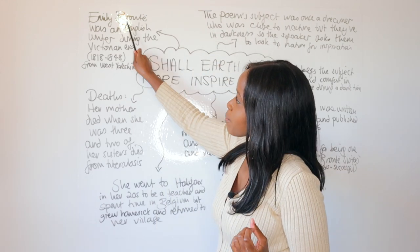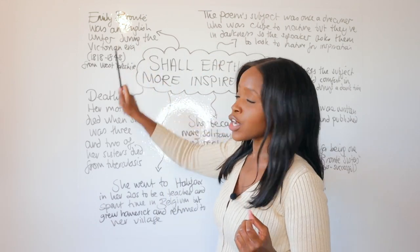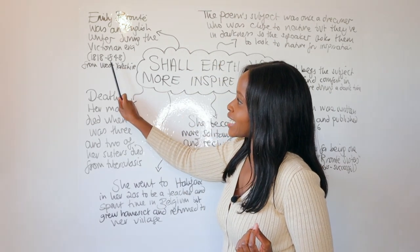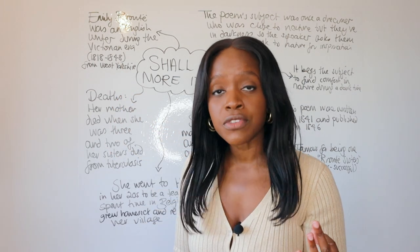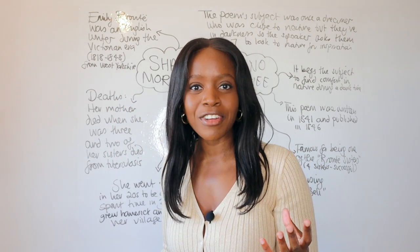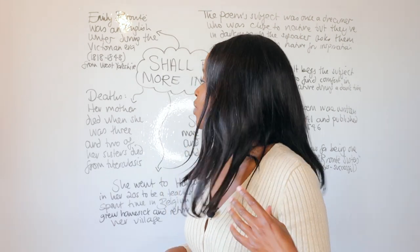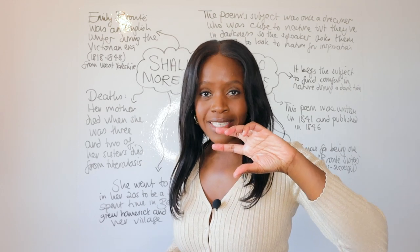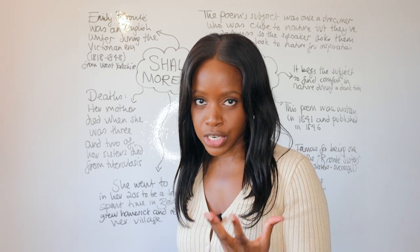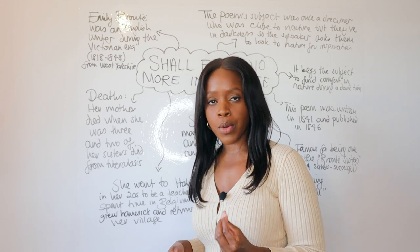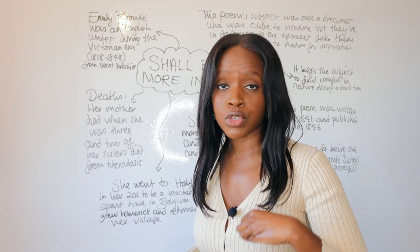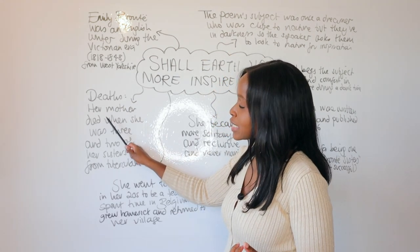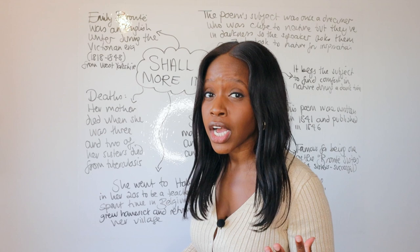Emily Brontë is an English writer who lived during the Victorian era. She lived between 1818 and 1848, and she was specifically from a fairly small village in West Yorkshire. One thing to remember about Emily Brontë — and this connects to the themes of loss and depression touched on within this poem — is that she was no stranger to death and tragedy. She experienced very significant deaths from very early on in her life.